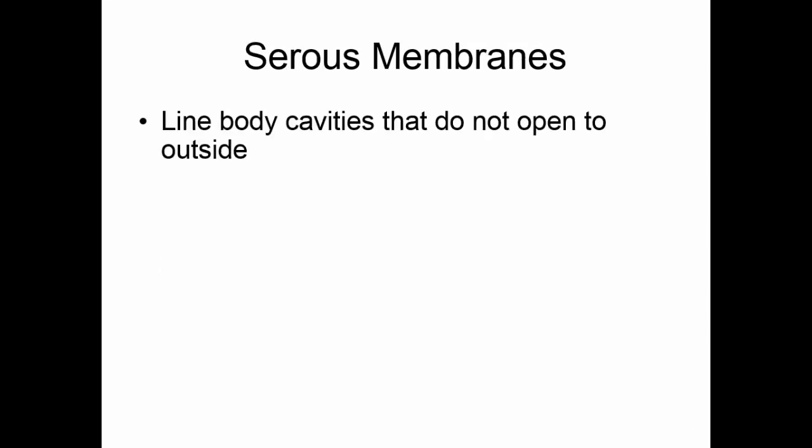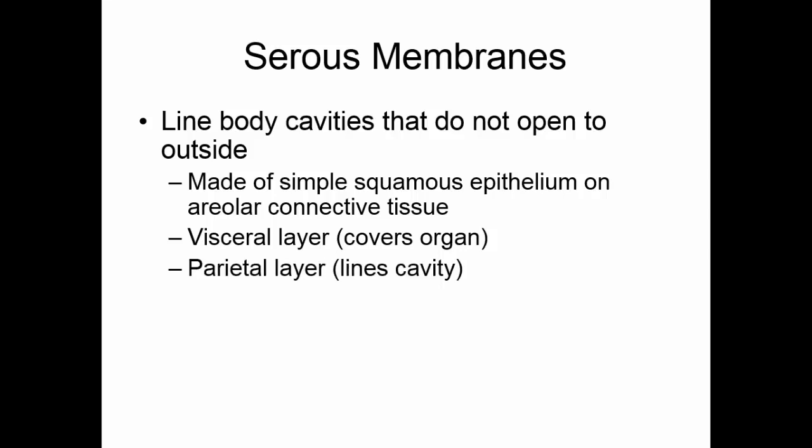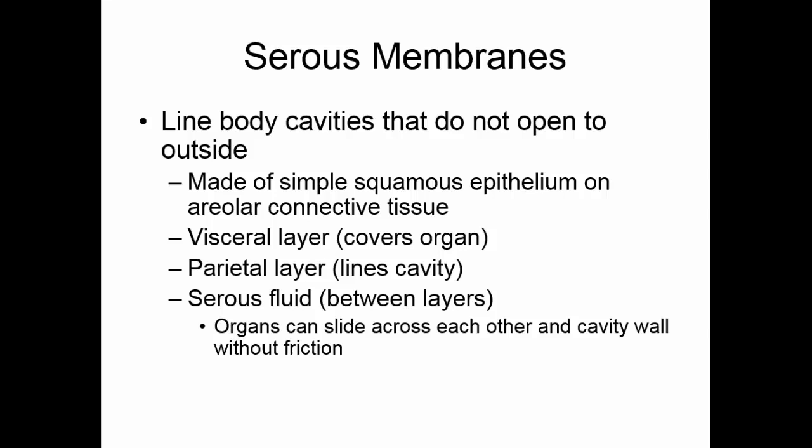Serous membranes line cavities that do not have a natural opening to the outside. They are composed of a simple squamous epithelium on top of an areolar connective tissue. Because these cavities have no natural opening, the membrane covers the organs and also lines the cavity. The visceral layer covers the organs in the cavity, and the parietal layer lines the cavity. The space between the two layers is filled with serous fluid, which acts as a lubricant so organs can slide without friction.